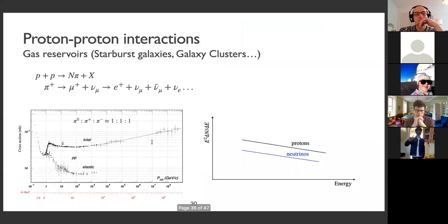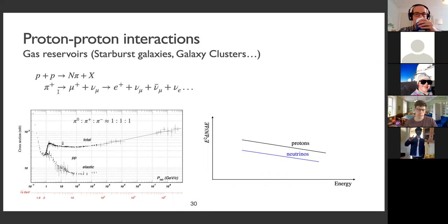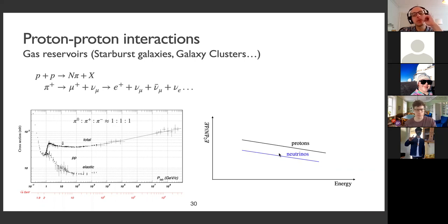If we have neutrino production here, it has to be in interactions of protons with the gas — proton-proton interactions, which is almost at rest. We have pion production with a different ratio of charge to neutral pions than in photopion interactions. What's different is that the neutrinos produced basically follow the spectrum of the parent protons. So far we've been looking at the IceCube spectrum which always looks like a power law, and we saw that blazers don't produce this kind of power law in general from p-gamma interactions.